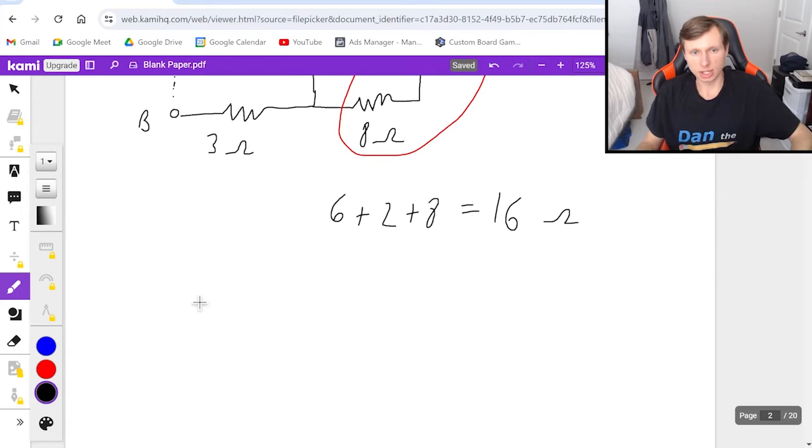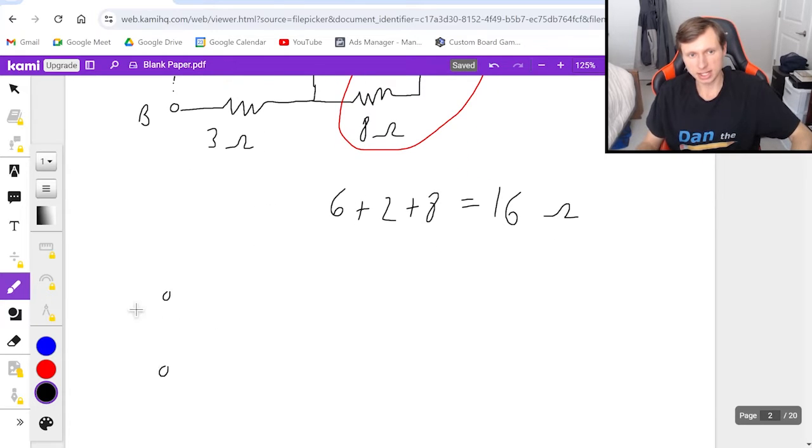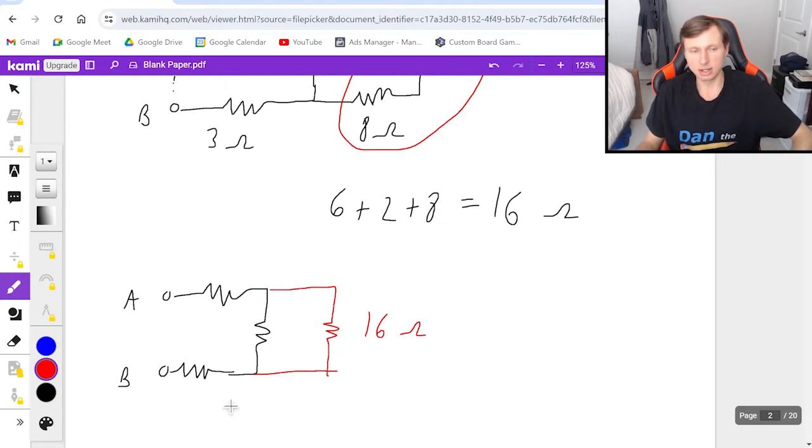So now redrawing the circuit, here's point A and point B again. These resistors are the same as before, but now those three resistors got combined to a single resistor of 16 ohms.